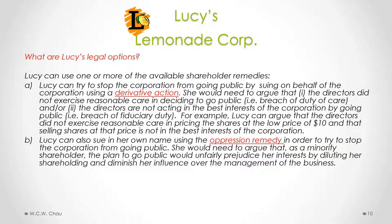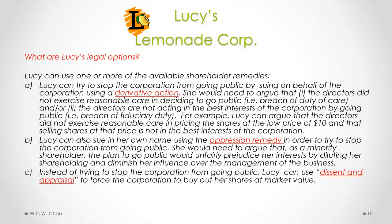The second shareholder remedy Lucy can consider is the oppression remedy. Lucy can sue in her own name using the oppression remedy to try to stop the corporation from going public. She would need to argue that, as a minority shareholder, the plan to go public would unfairly prejudice her interests by diluting her shareholding and diminishing her influence over the management of the business. The third remedy Lucy can consider is dissent and appraisal — instead of trying to stop the corporation from going public, Lucy can use dissent and appraisal to force the corporation to buy out her shares at market value, essentially asking to be cashed out and walking away from the corporation.